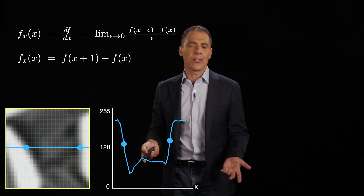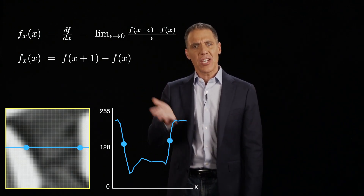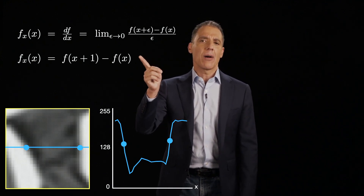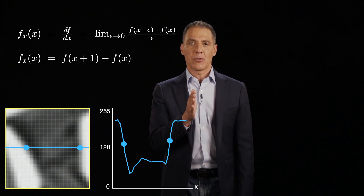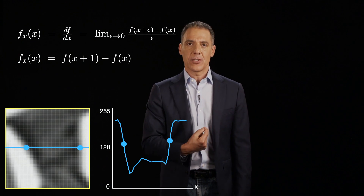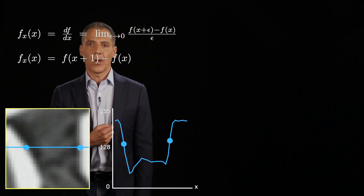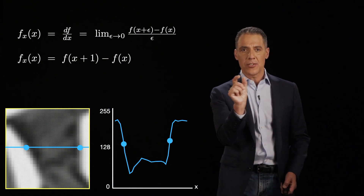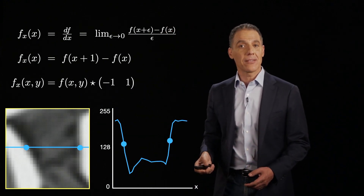Now the question is, how do I compute this? This is one-dimensional — what happens to the Y direction, and what if the rate of change is diagonal? The approach is actually easy: go to a pixel, look at the difference relative to your neighbor, that difference is the output. Move over 1, take the difference, do it again — slide over, compute, slide over. That sounds a lot like a convolution. And in fact, it is a convolution.